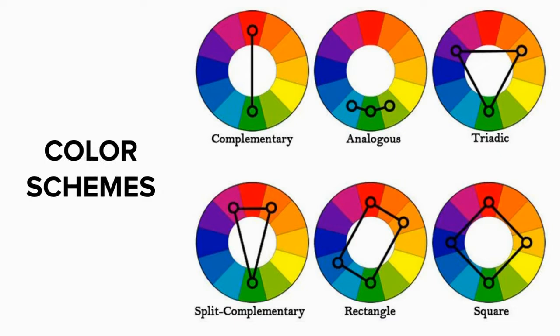It's important to understand how the color wheel is organized because knowing that information can help you combine your colors in creative ways. These are known as color schemes — ways that artists have figured out how color works really well together. A simple example would be complementary colors, which are colors located directly across from one another on the color wheel. There are also analogous color schemes, which are three colors side-by-side; triadic color schemes, which create a triangle on the color wheel; and so on. Knowing how to use and combine colors in color schemes is a simple and effective way to use color really nicely.